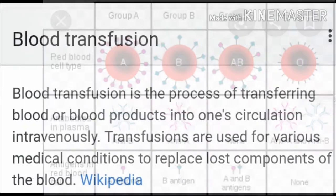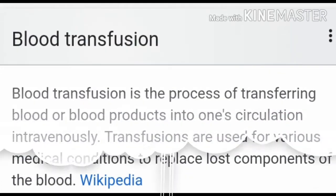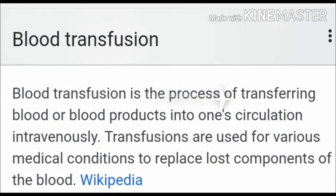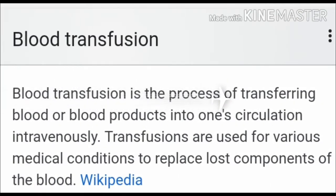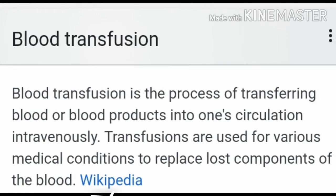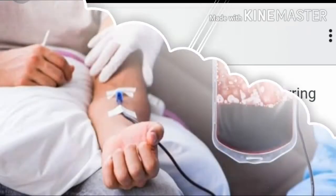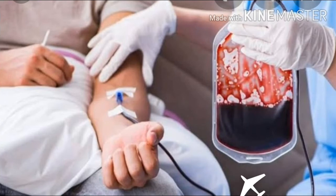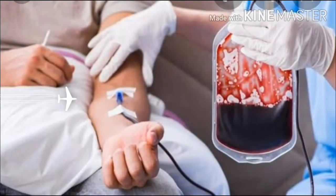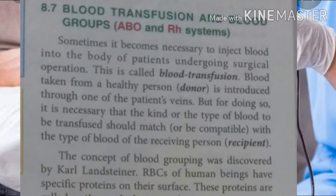It becomes necessary to inject blood into the body of a patient undergoing a surgical operation — this is called blood transfusion. Blood taken from a healthy donor is introduced through one of the patient's veins. For doing so, it is necessary that the type of blood to be transfused should match or be compatible with the type of blood of the receiving person, that is, the recipient.